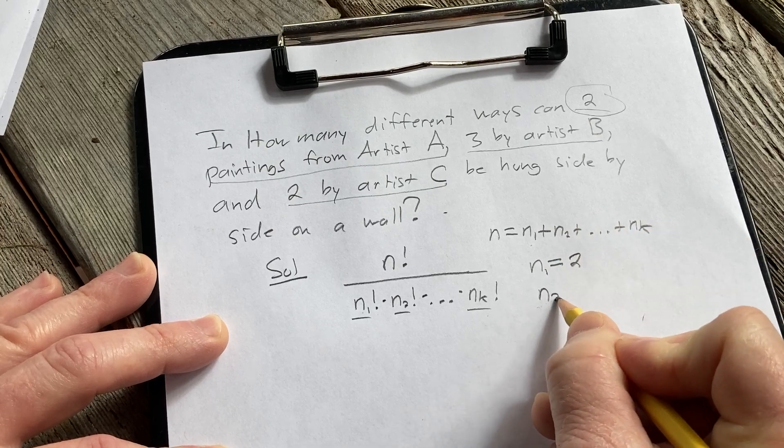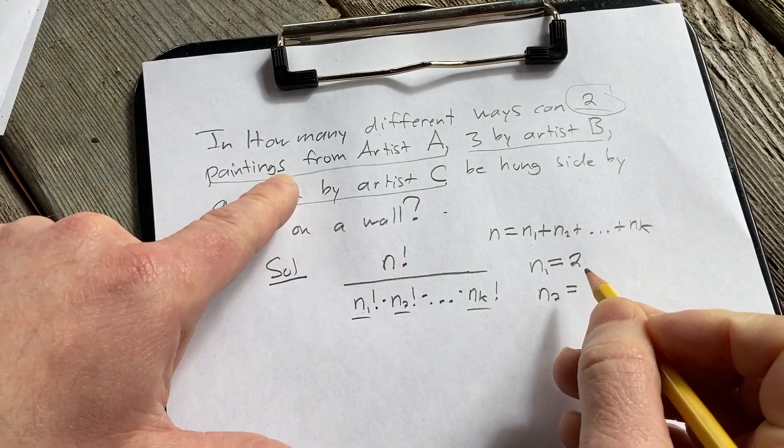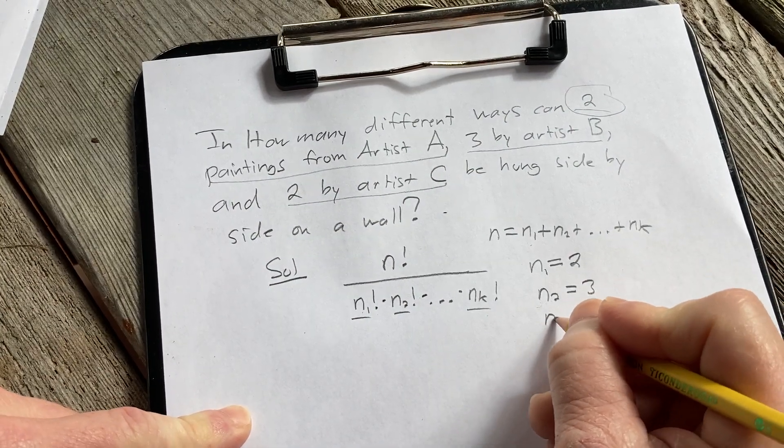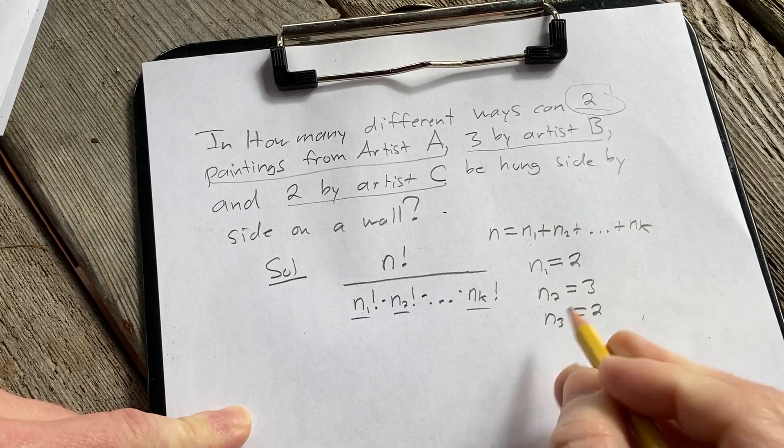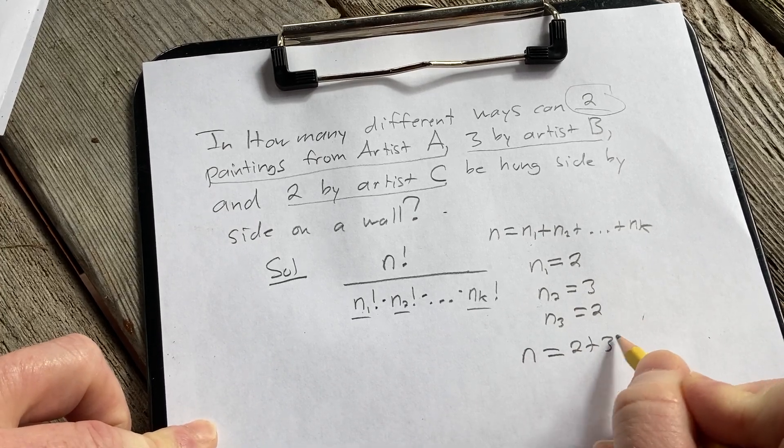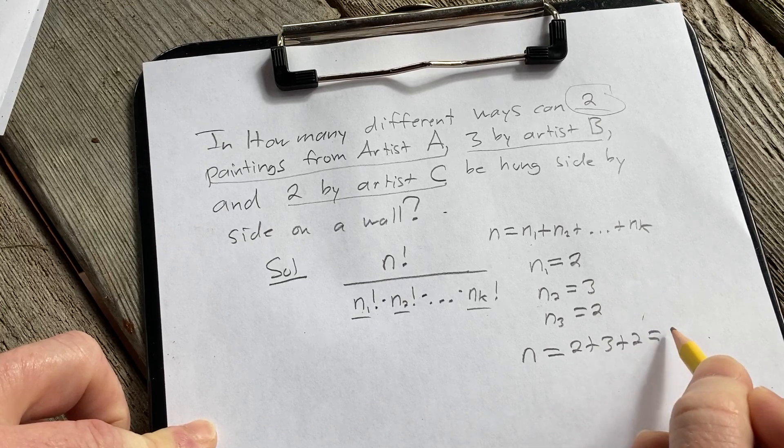And then n sub 2 is going to be 3, three by artist B. And then n sub 3 is going to be 2. So in our case n is going to be the sum, so 2 plus 3 plus 2 which is going to be 7.